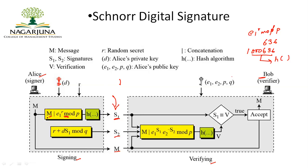Alice concatenates the message with e1^r mod p, where p is prime, r is a randomly selected secret integer, and e1 is the public key. This concatenated input goes to hash function h. Alice also generates s2 as: s2 = (r + d·s1) mod q, where d is the private key. Finally, s1, s2, and the message are sent to Bob.